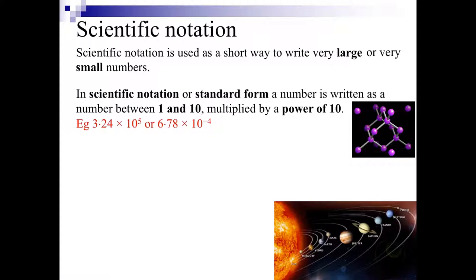We have 3.24 times 10 to the power of 5, that's going to be a bigger number because it's a positive power, and then we have 6.78 times 10 to the power of negative 4, which will be a very small number because it's got a negative power.